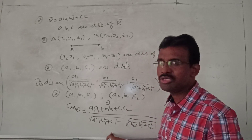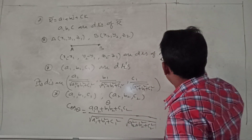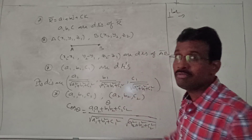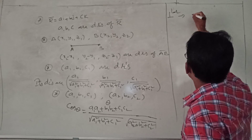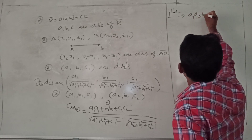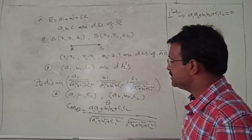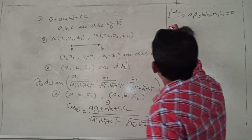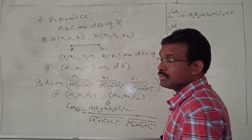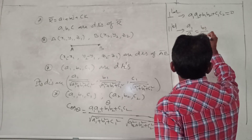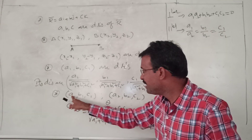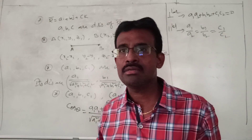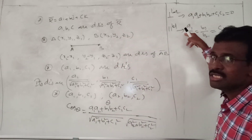The perpendicular condition: if A1·A2 + B1·B2 + C1·C2 equals 0, then the two lines are perpendicular to each other. The parallel condition: if A1/A2 equals B1/B2 equals C1/C2, then the two lines are parallel to each other. These are the perpendicular and parallel conditions between two lines.